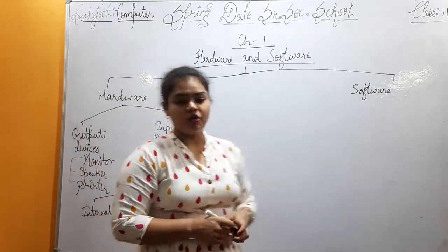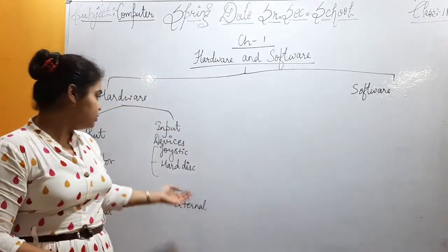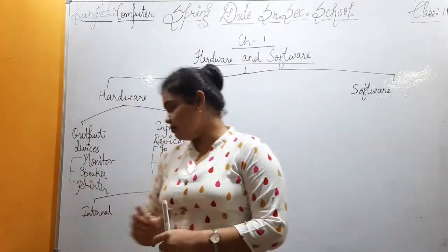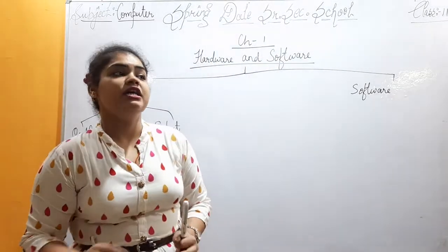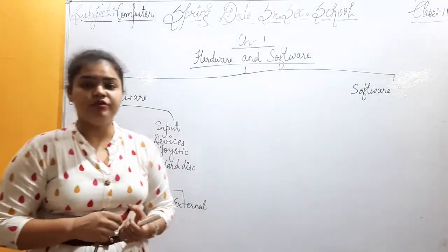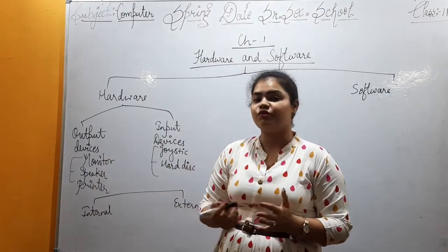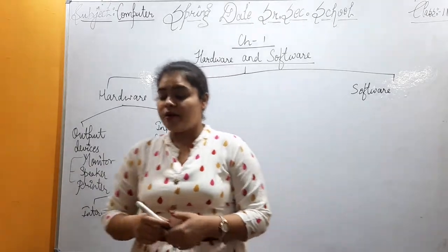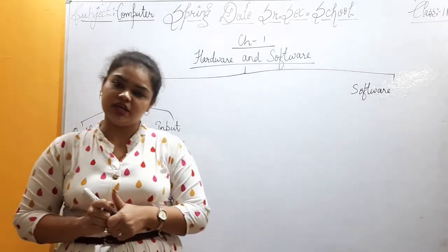After this we have the internal and external parts. Internal devices are the hard disk, which stores every piece of data in our computer. External devices include pen drives, CDs, and more. The pen drive is used to store data and transfer it from computer to pen drive, or from pen drive to computer. We can also transfer data using a USB cable.